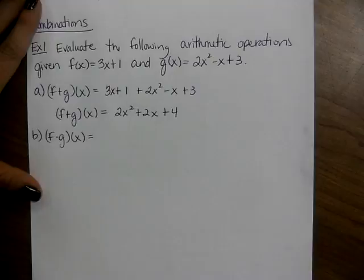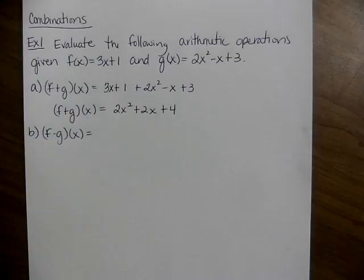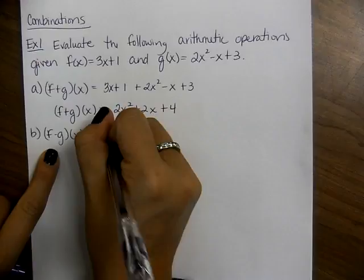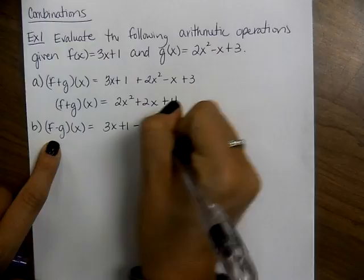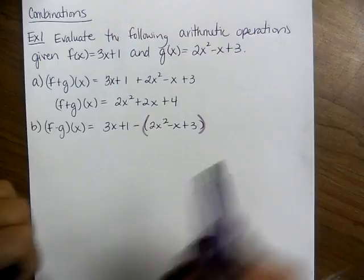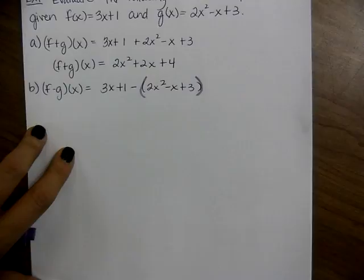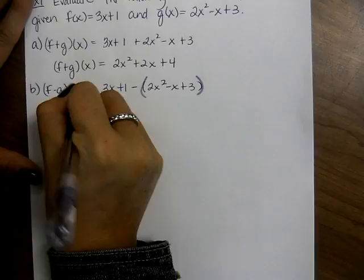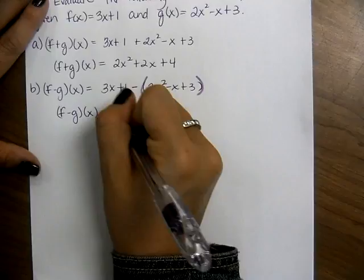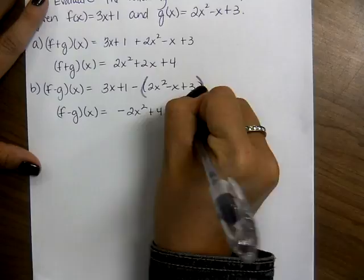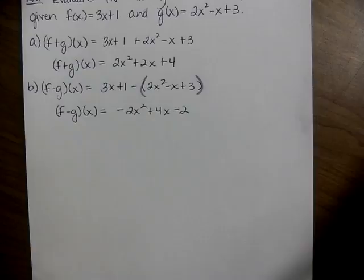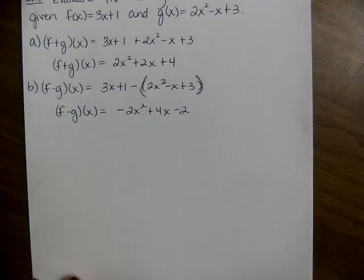What do you think you do if it says f minus g of x? Subtract — that's what it's telling you to do. The only thing to warn you about is that you're subtracting the entire quantity of g(x). So start with f(x), 3x + 1, and then subtract 2x² - x + 3. A common mistake is forgetting to distribute the negative sign. So then we distribute, combine like terms, and end up with -2x² + 4x - 2. Once you simplify, it's done — you don't factor anything out.